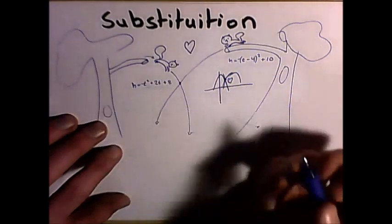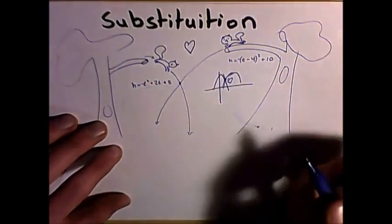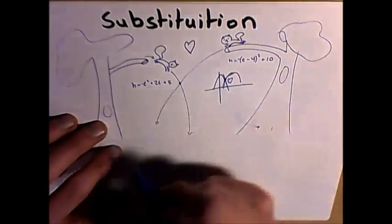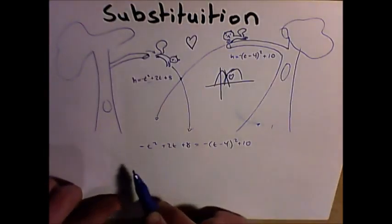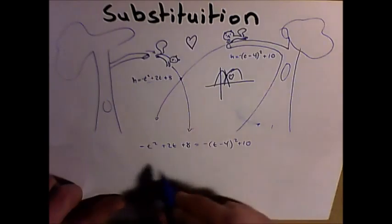This equation is already equal to h, and this equation is equal to h. So if both equations are equal to h, we know that both equations are also equal to each other. Now we can simply expand this out and so on and so forth, and we can add these together and simplify it.